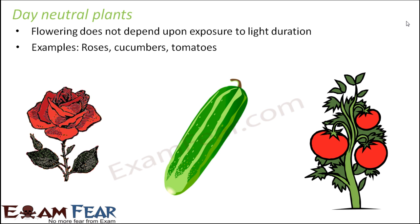Understanding photoperiodism explains why certain plants flower only during certain seasons. Short day plants, which need shorter days, generally tend to flower during the spring or autumn season because during those seasons the days are shorter. Long day plants may flower during the summer season because the days are longer during summer.